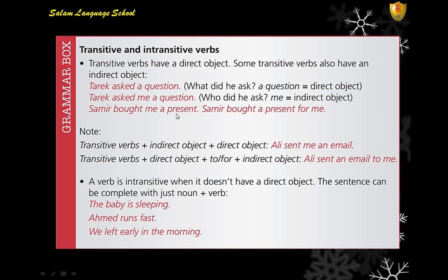For example: 'Samir bought me a present' — two objects. Or 'Samir bought a present for me' — same meaning, but the objects are exchanged. If you use the transitive verb with the indirect object first, the indirect object is followed directly by the direct one: 'Ali sent me an email.' But if you use the direct object first, you use prepositions like 'to' or 'for': 'Ali sent an email to me', or 'Samir bought a present for me' — it depends on the verb.